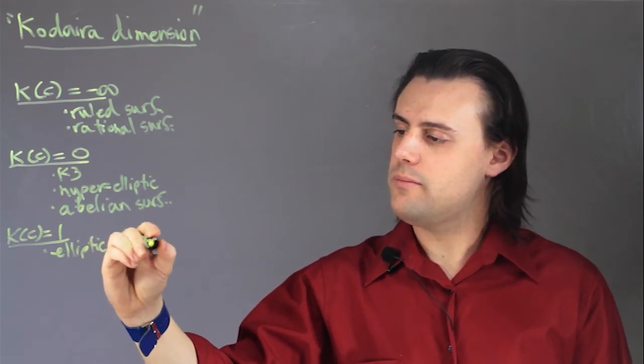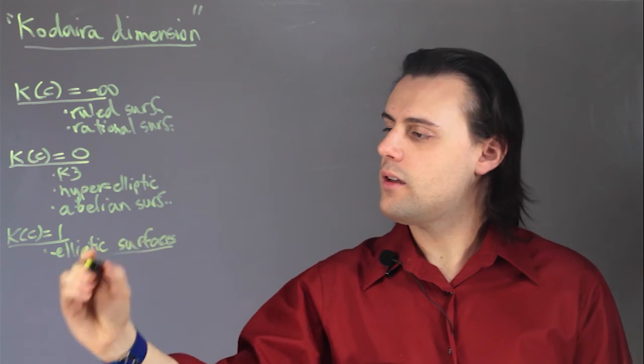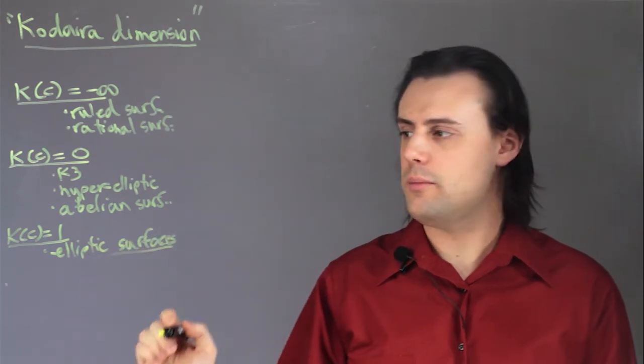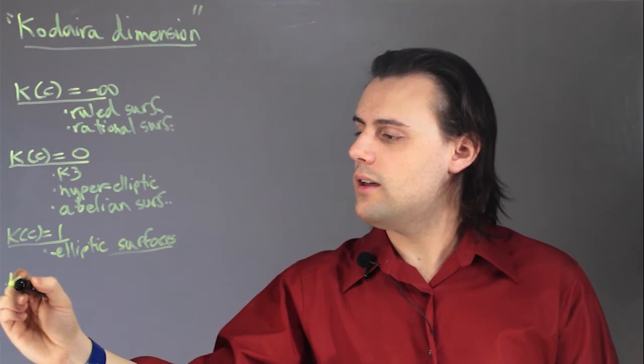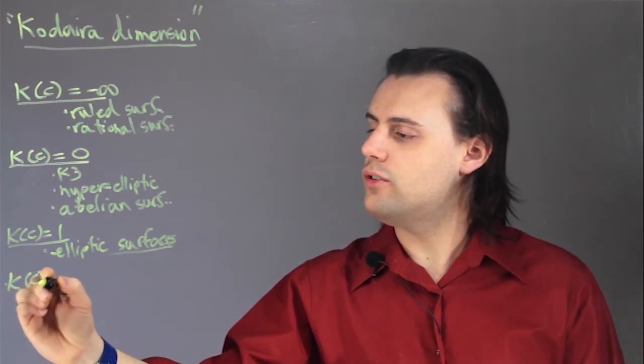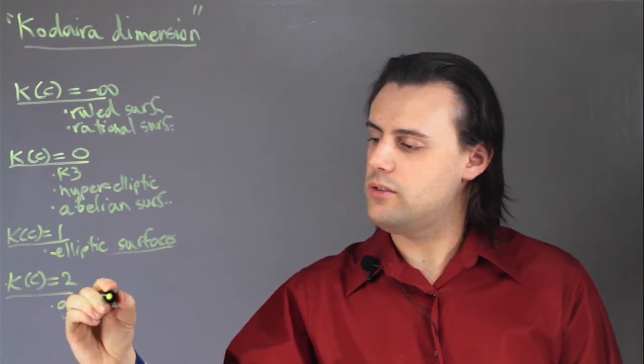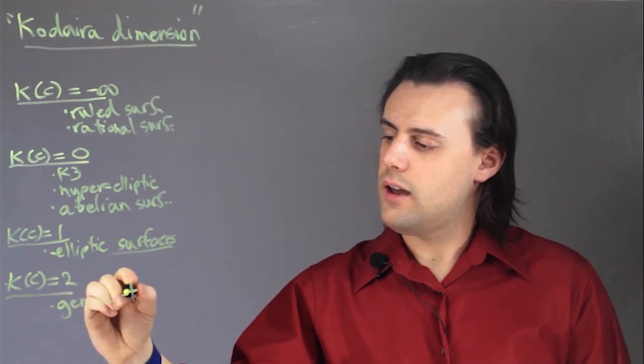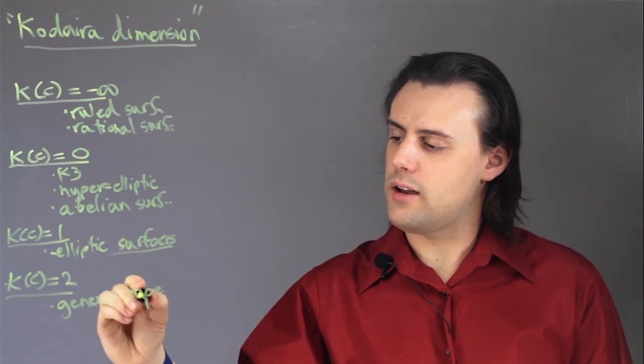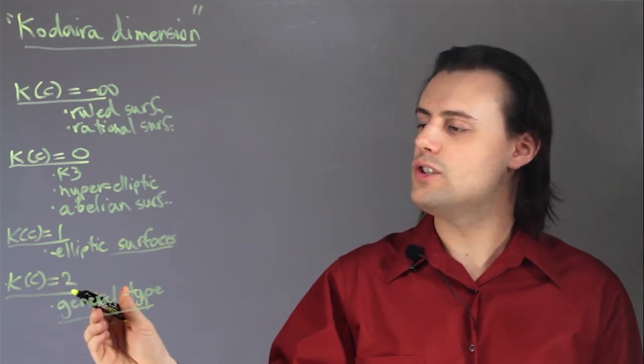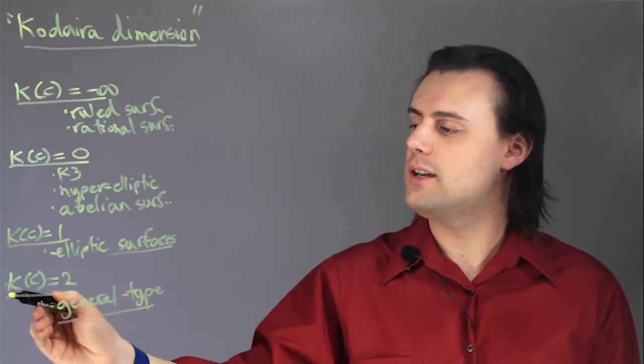And finally, the fourth type of algebraic surface, characterized by the Kodaira dimension, has a dimension of 2. And these are general type surfaces, and most algebraic surfaces fall under this category, this classification, where they have a Kodaira dimension equal to 2.